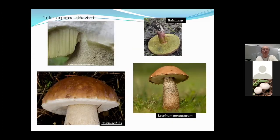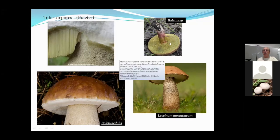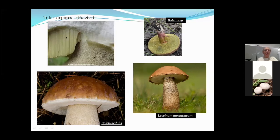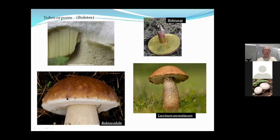In the bolete family, the spore-bearing surface consists of long tubes. The underside looks like a sponge, but if you look carefully it's actually thousands of tiny tubes pressed together. Some of our best edibles, like the king bolete Boletus edulis and Leccinum species with black dots on the stem, are in this family. It's really important to distinguish that the spore-bearing surface consists of tubes.